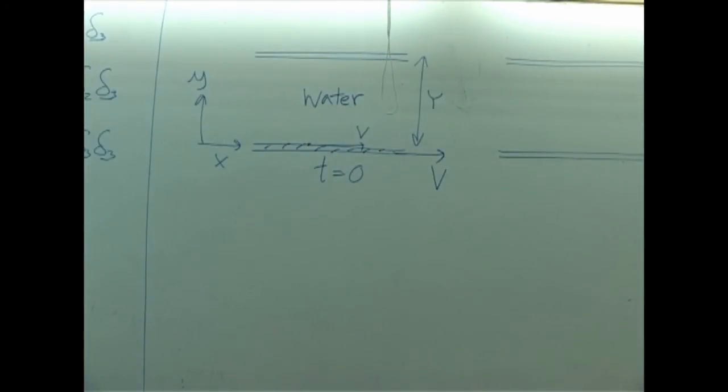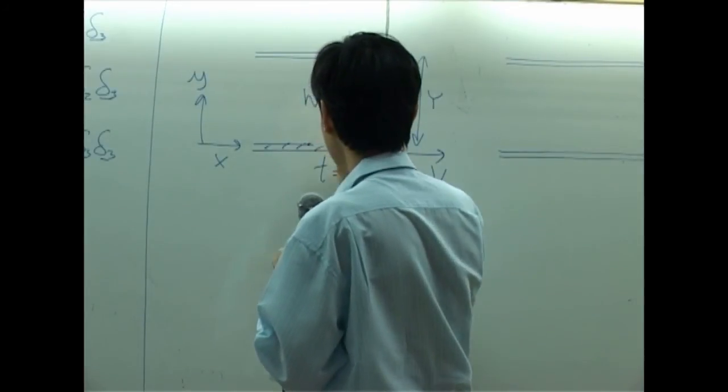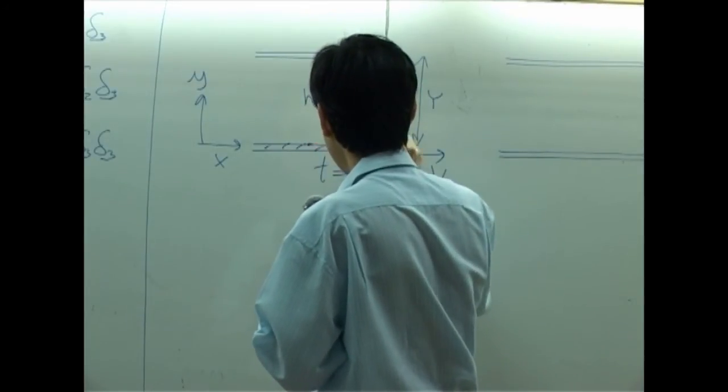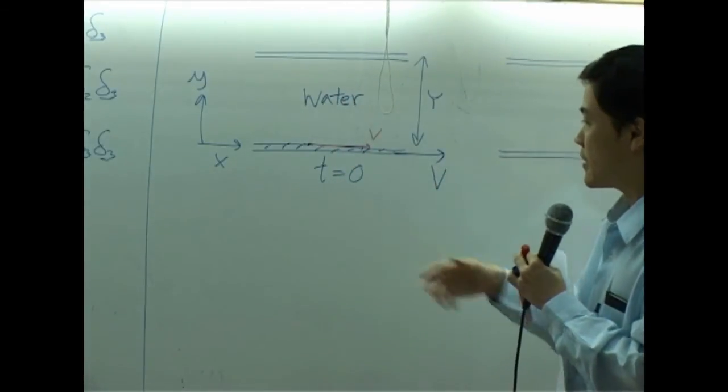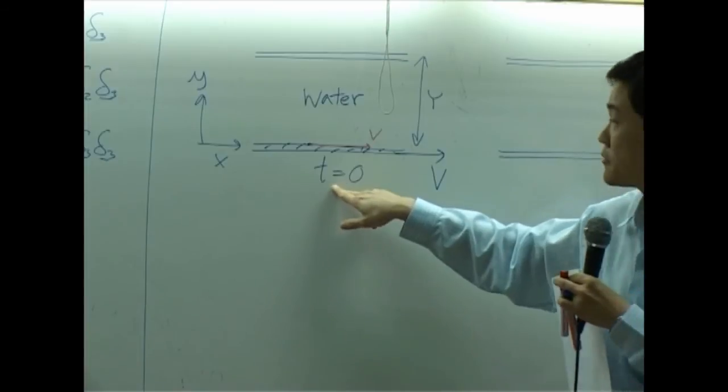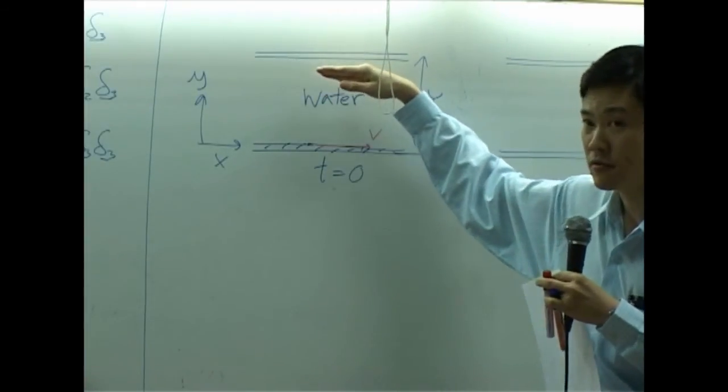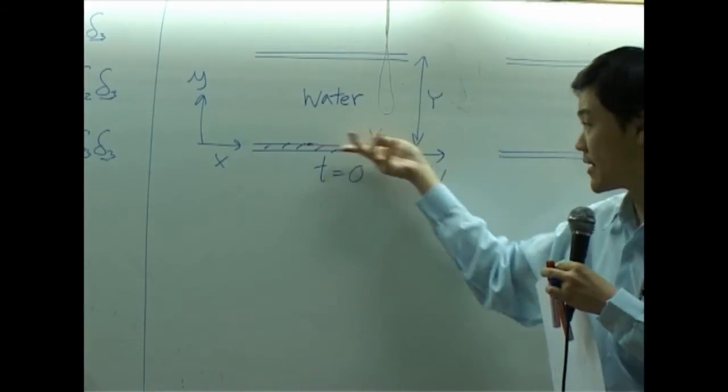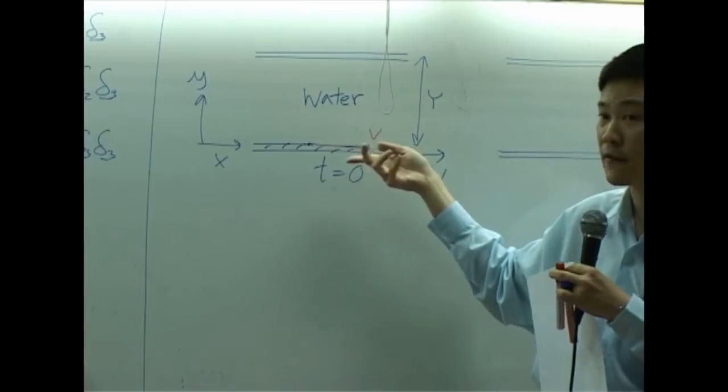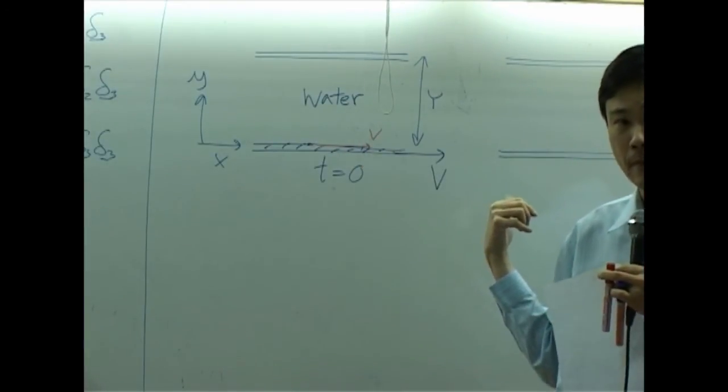So at first, let me use red color. At first, at time equal to zero, water at other levels still not moved. Only at this piece, at the interface is moved under no slip condition.